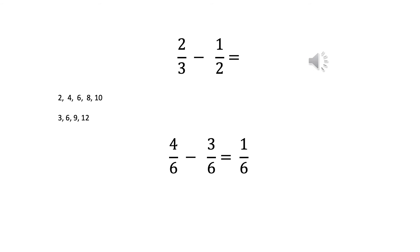OK, click on the arrow to see if you are correct. So hopefully you either knew that the lowest common multiple in the two and the three times tables was six. Or if not, you listed your multiples.